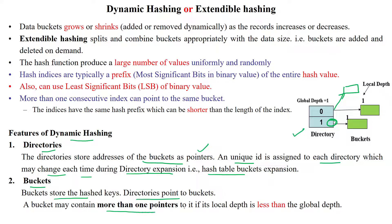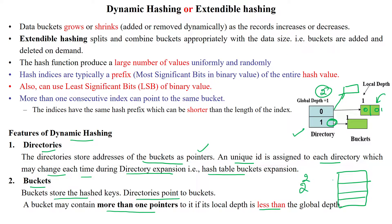The bucket may contain more than one pointer to it if its local depth is less than the global depth. Suppose if the global depth is two, the bucket can have two values — for example, zero-zero and zero-one. So here when we are taking zero-one, the directory has to be expanded. When the global depth is two, our directory will also expand into two-power-two. So the number of digits will be two: zero-zero, zero-one, one-zero, one-one — like this we have to expand the given directory.